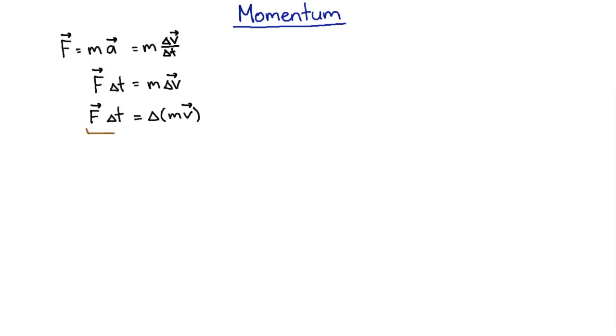Then we can make two new definitions. The first is this, the force times the time. This is called an impulse. And the second is this, the mass times the velocity, which is known as the momentum.